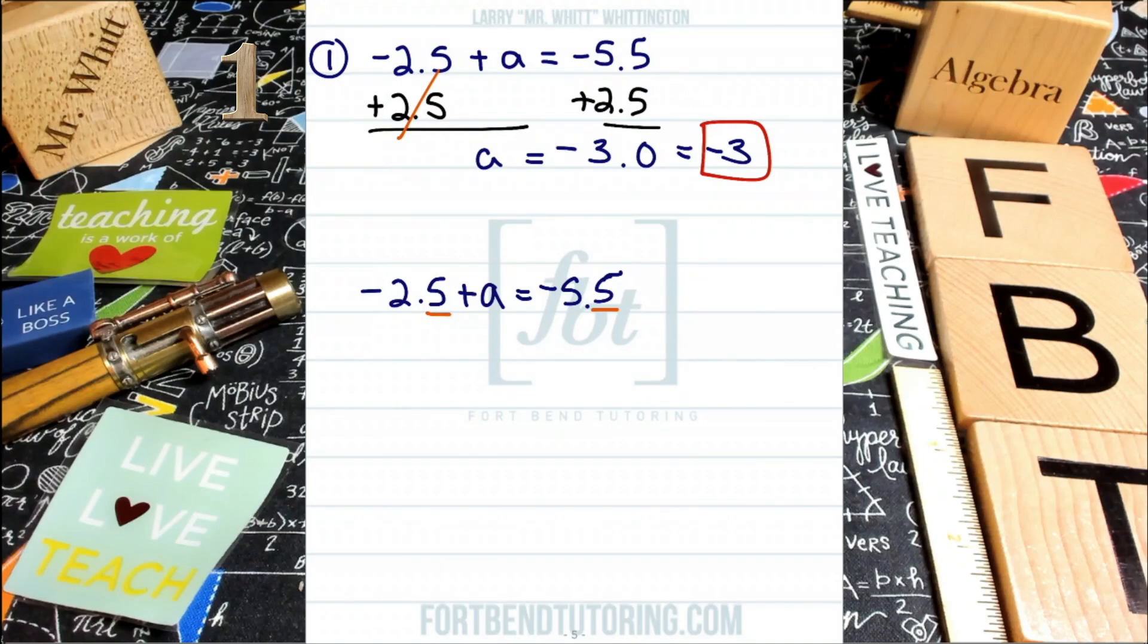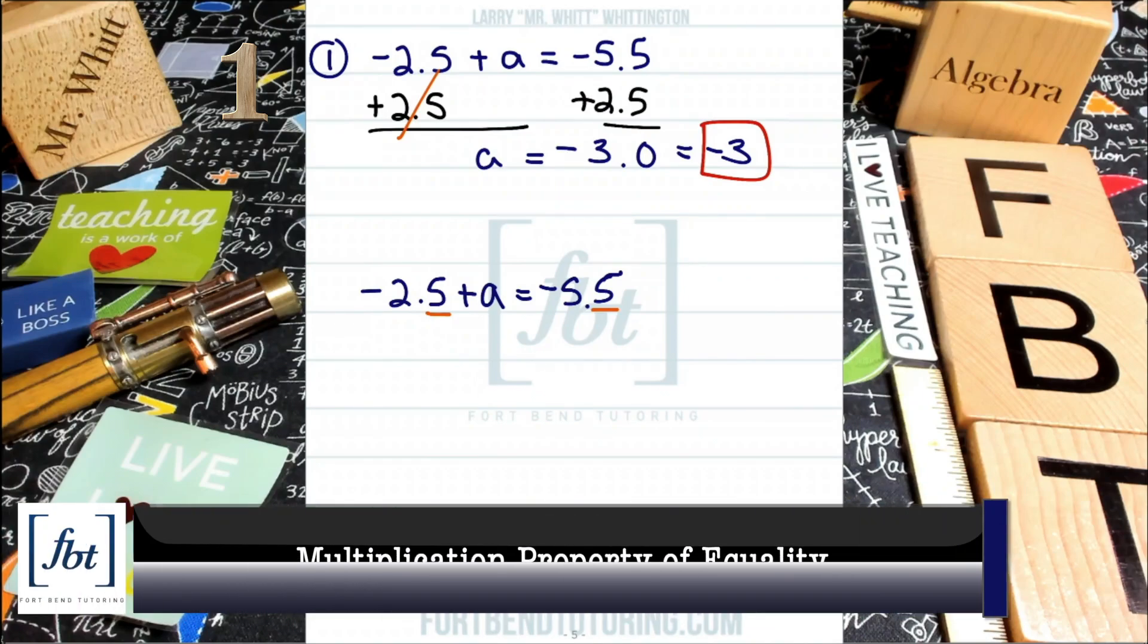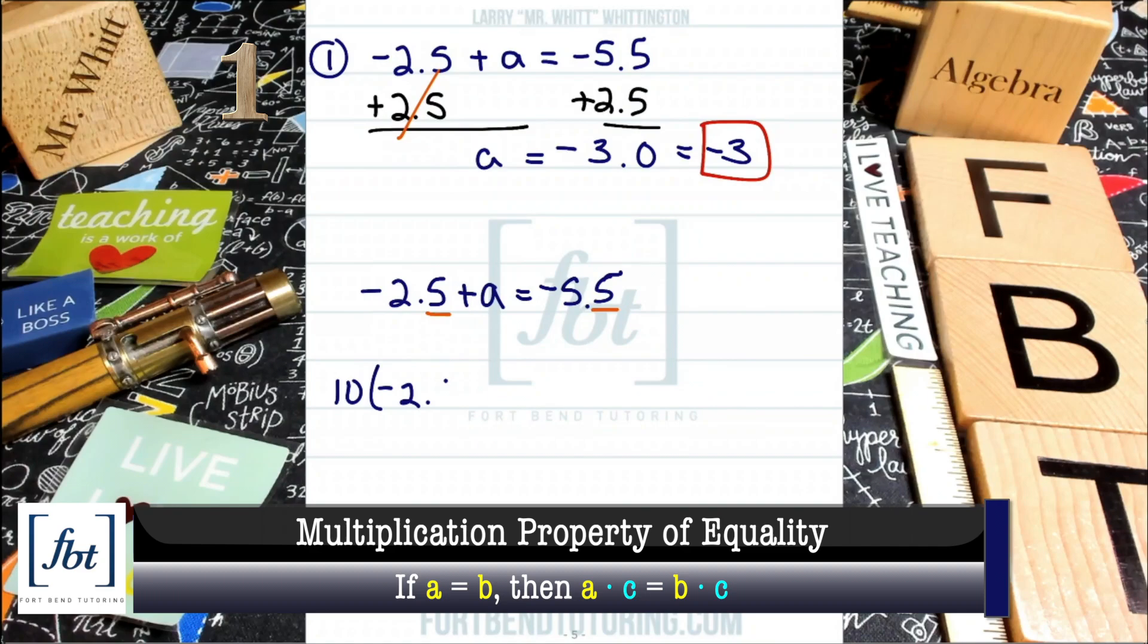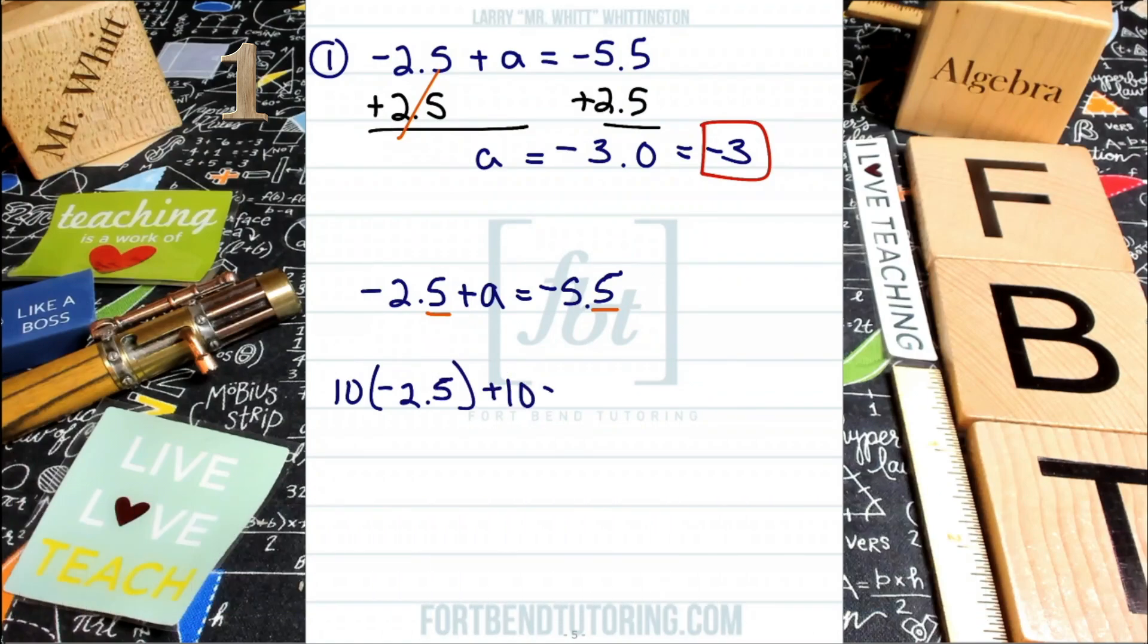Let's see what happens when you multiply each and every term by the smallest place value. Remember I said the smallest place value in this problem was the tenths place. So I'm going to multiply everything by 10 because of that. So I'm going to have 10 times negative 2.5 plus 10 times A plus 10 times negative 5.5. That's what we have. Well, what that does for us guys is it allows us to move the decimal one place to the right. So over here, there's going to be one place to the right. This is going to be moved one place to the right. And you're going to end up with the following. You'll have negative 25 plus 10A equals to negative 55.